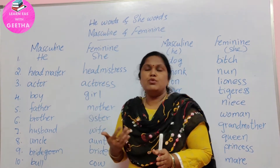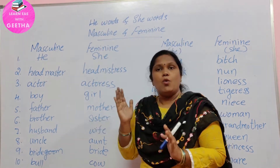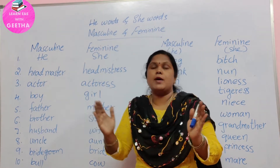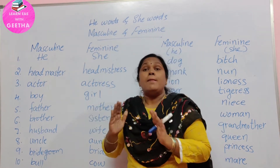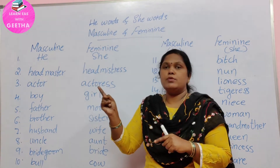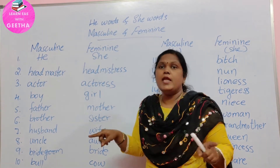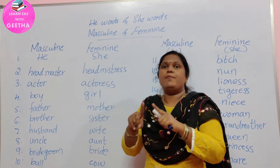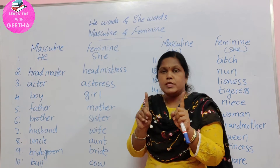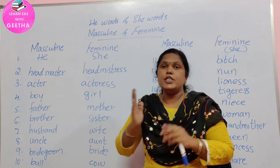Don't get confused — he words and she words are only genders. Boy and girl are genders. But they are not opposites. Father and mother are not opposites; sister and brother are not opposites. Opposites are totally different things. They are genders — that is he word and she word.